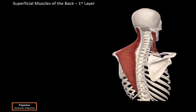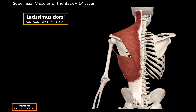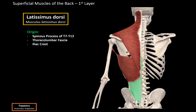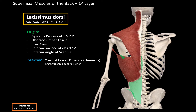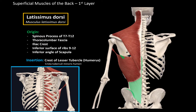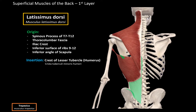Next we have the latissimus dorsi, which has several origin points. It originates from the spinous processes of T7 to T12, the thoracolumbar fascia, the iliac crest, the inferior surface of the 9th to 12th ribs, and the inferior angle of the scapula. The fibers unite and insert at the crest of the lesser tubercle on the humerus, as you see here. The overall function of the latissimus dorsi is to internally rotate, adduct, and dorsal flex the arm.